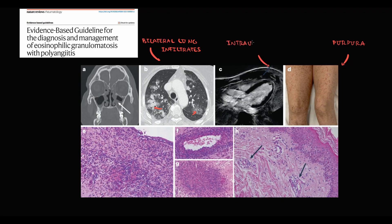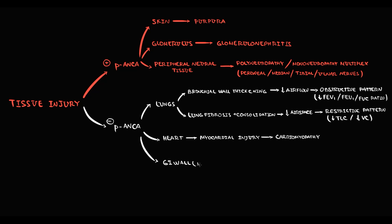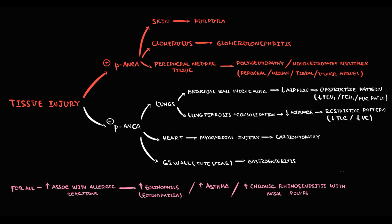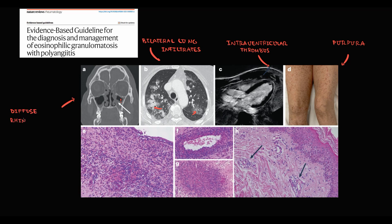One possible manifestation of Churg-Strauss vasculitis is intraventricular thrombosis. The third site of injury in the P-ANCA-negative pattern is the GI wall — most commonly the intestine — where inflammation causes gastroenteritis. Both P-ANCA-positive and P-ANCA-negative patterns share the same features: all are associated with allergy, all have elevated eosinophils (eosinophilia), and all are associated with asthma and chronic rhinosinusitis with nasal polyps. High amounts of eosinophils in the granuloma are a specific feature of Churg-Strauss vasculitis.